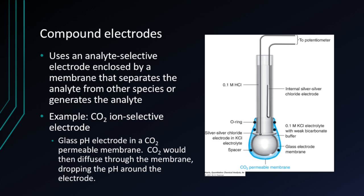Compound electrodes are often used with gases. An analyte-selective electrode is enclosed by a membrane that separates the analyte from other species or generates the analyte of interest. An example is a carbon dioxide ion-selective electrode, where a glass pH electrode is wrapped in a CO2-permeable membrane. The carbon dioxide diffuses through the membrane and the pH around the electrode decreases.